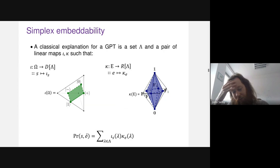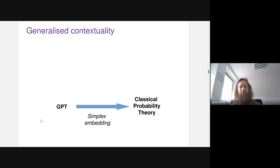This is a notion of classicality expressible within the language of GPTs. But the title of this talk mentions contextuality, and I haven't mentioned contexts yet — so how do these two things relate to one another?